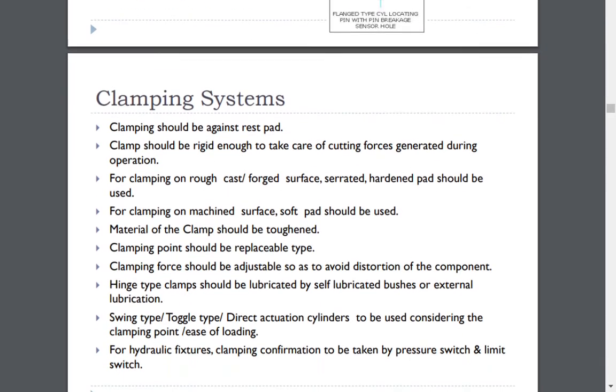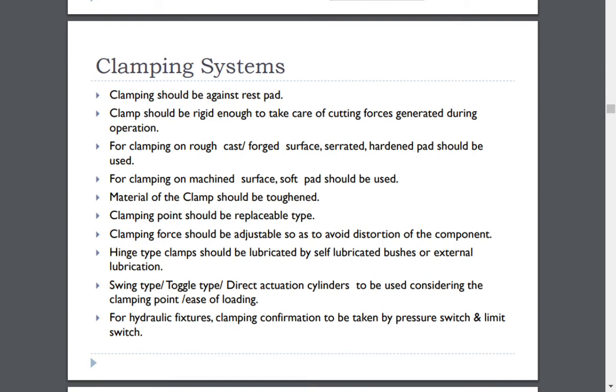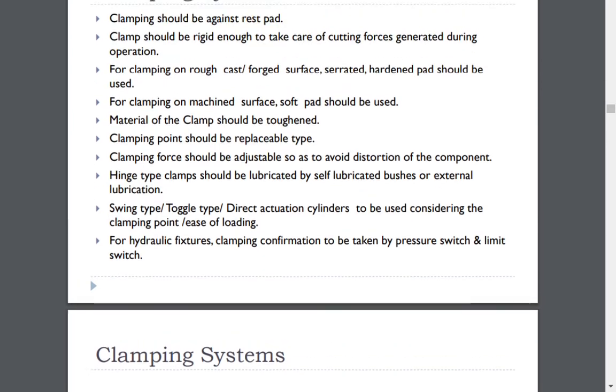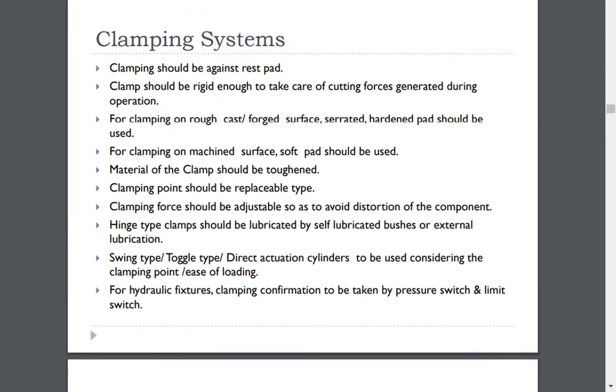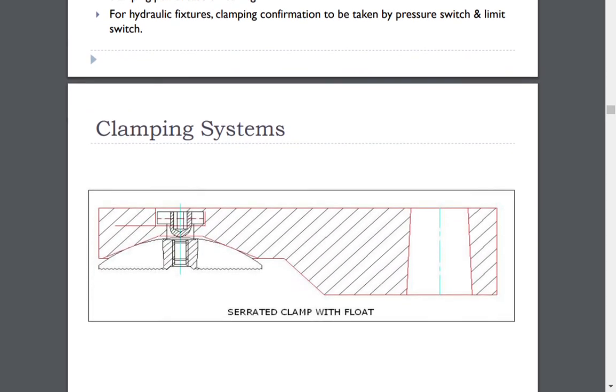The fourth and most important element of fixture is clamping systems. Clamping should be against rest pad. Clamp should be rigid enough to take care of cutting forces generated during operation. For clamping on rough cast or forged surface, serrated, hardened pad should be used. For clamping on machine surface, soft pad should be used. Material of the clamp should be toughened.